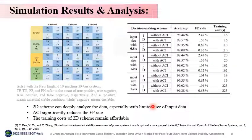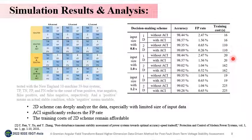The proposed method is tested and verified on the New England 10-machine 39-bus system, with the same dataset as the reference paper. As the table shows, with limited input data, the higher dimension scheme shows obvious advantages, and the accuracy has been maintained at an over 99% level. Although the 2D scheme brings larger training costs, the drawback is acceptable since within this 100-second level timescale, a structural change of the targeted system can hardly happen. Also, ACI significantly reduces the false positive rate, with the largest FP rate decrease achieving 60%, from 0.65% to 0.26%.